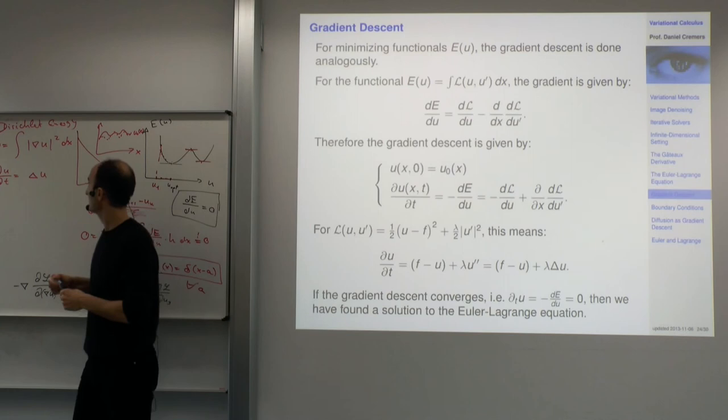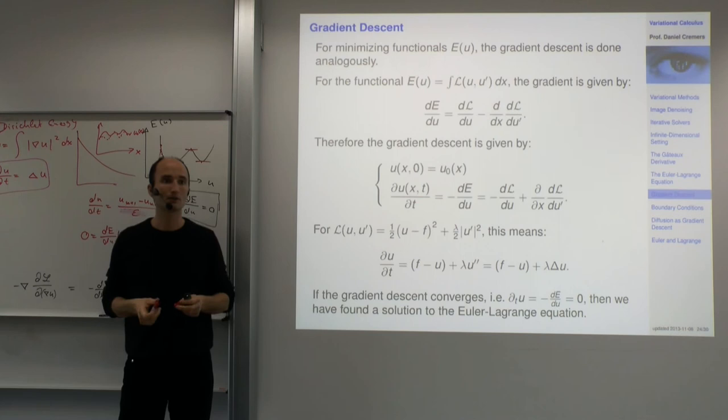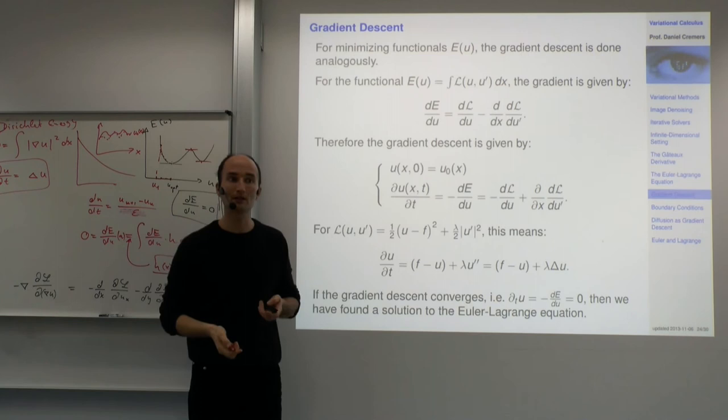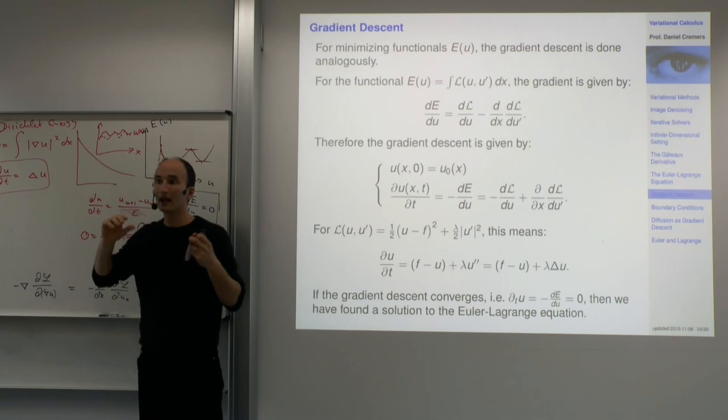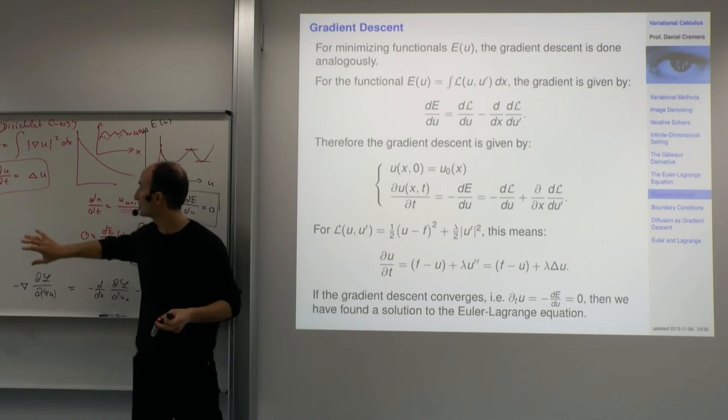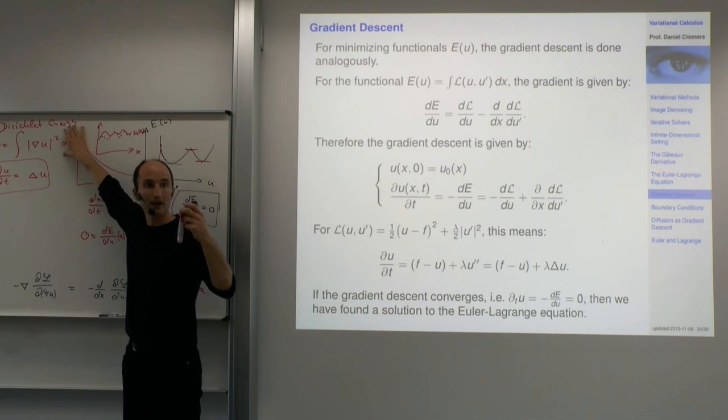We have a more abstract way to introduce diffusion: the diffusion as a time-dependent process is nothing but the gradient descent on a smoothness energy. This helps because from the smoothness energy, it's a convex energy, the global minimum is a constant function, which is exactly what this process leads to. Variational calculus gives you a level of abstraction to understand what diffusion processes are doing.